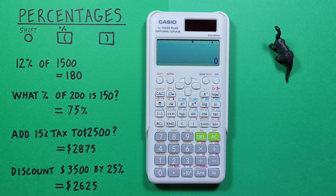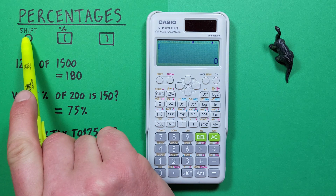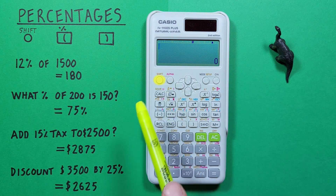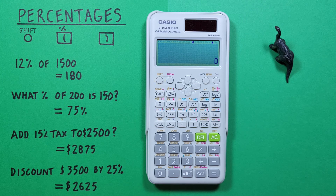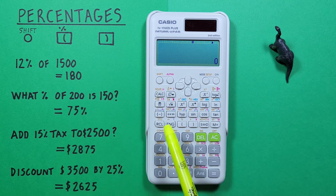Hello and welcome to HD Calcs. I'm Rick and in this video we're going to have a look at how we can use percentages on the Casio FX 115 ES Plus calculator. To do this we'll use the shift key located here, the left bracket with the shift function of percent located here, and the right bracket located here.